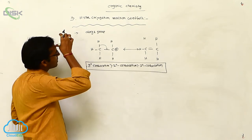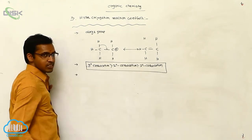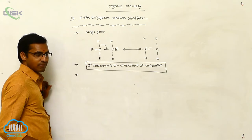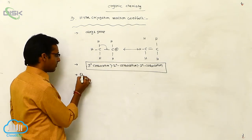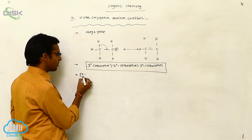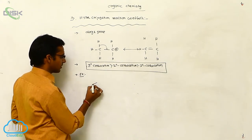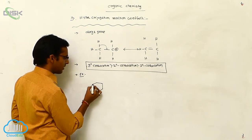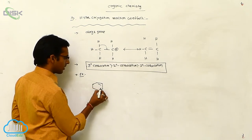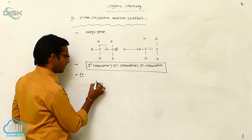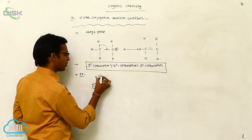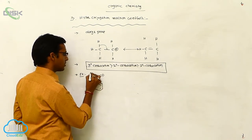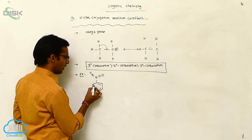Previously we discussed the resonance effect, or mesomeric effect. As one example of the mesomeric effect, consider a benzene ring with a nitro group attached. This is a nitro covalent bond.